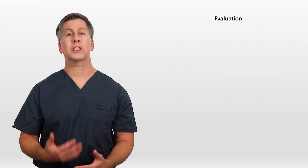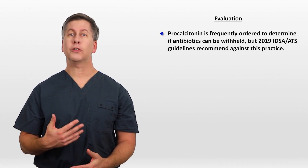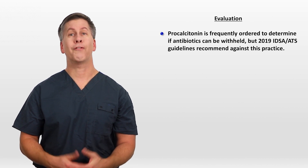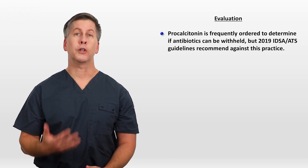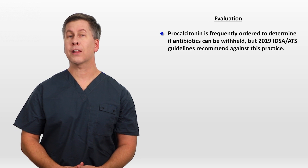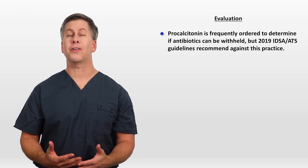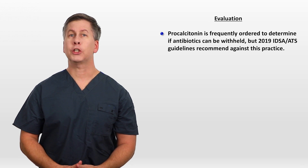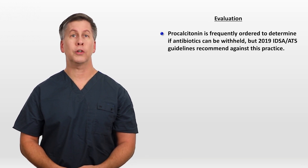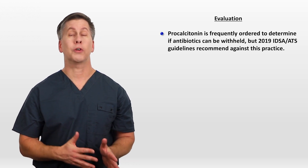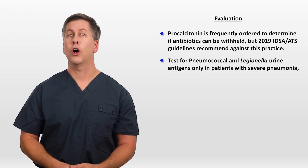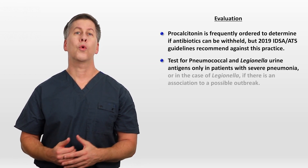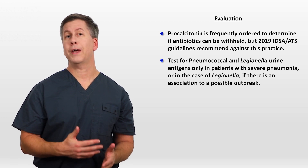Now for some tests that are sometimes appropriate but generally over-ordered. First, procalcitonin. Because it is believed to increase in response to bacterial infections and not viral ones, it's frequently ordered to determine if antibiotics can be safely withheld. However, the 2019 joint IDSA-ATS guidelines on community-acquired pneumonia specifically recommend against this practice, due to the observation that there is not a specific procalcitonin threshold which can reliably distinguish between bacterial and viral etiologies. Those same guidelines recommend testing for pneumococcal and legionella urine antigens only in patients with severe pneumonia, or in the case of legionella, if there is association to a possible outbreak.